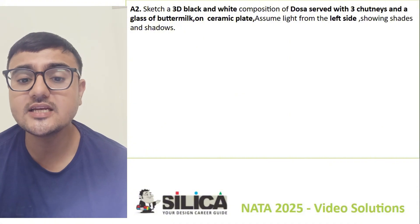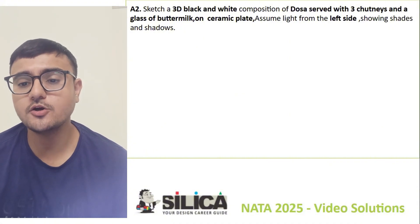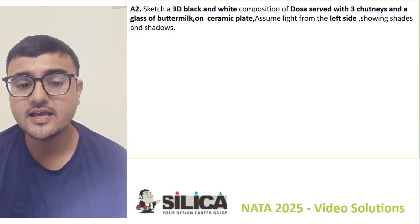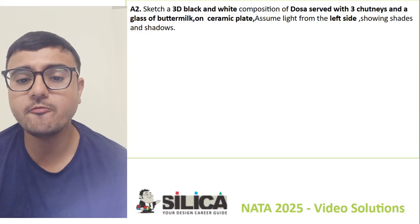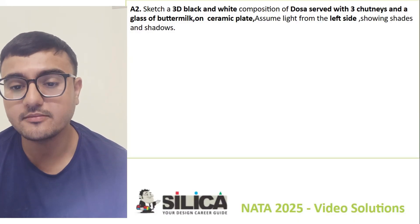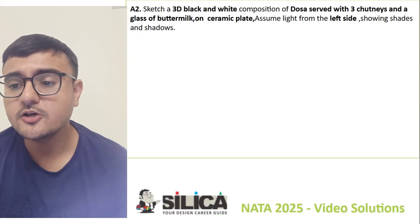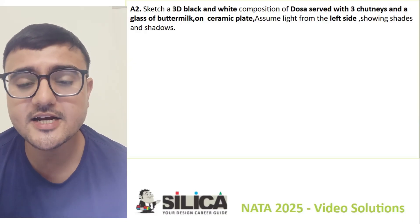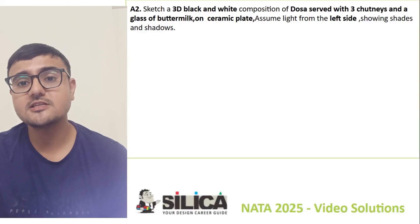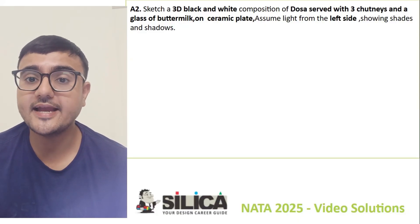Now talking about the A2 question: sketch a 3D black and white composition of a dosa served with three chutneys and a glass of buttermilk on a ceramic plate. Assume light from the left side, showing shades and shadows. A2 is about 3D composition using light, shade, and shadow in black and white media.